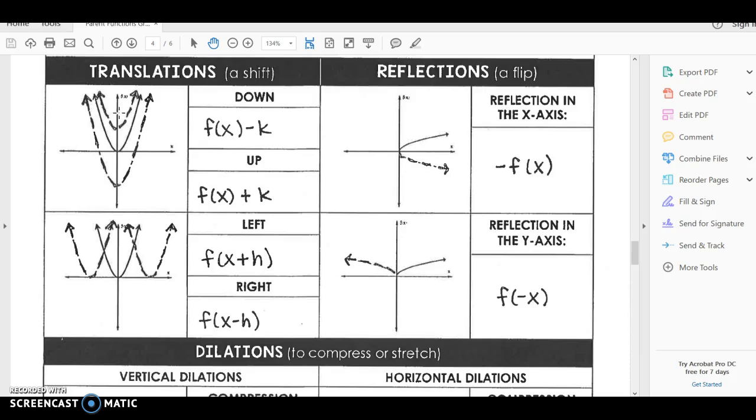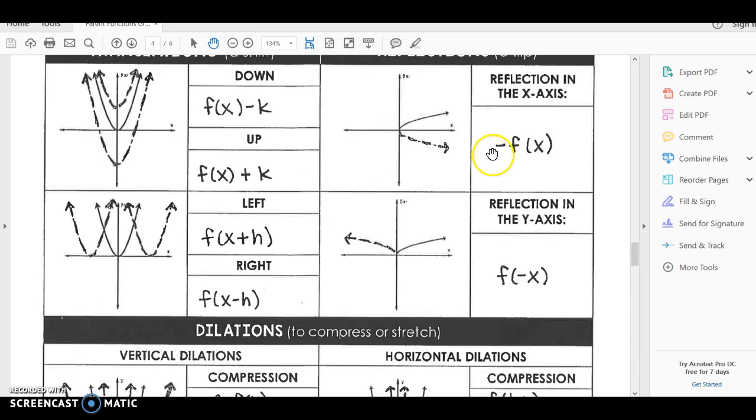All right, so a reflection. This parent function would have been a square root function, and you can see that if it's negative outside of your function, in front of your function, then it's going to reflect across the x-axis. We see these more often in Math 3 than we do the reflection across the y, but you will see both.